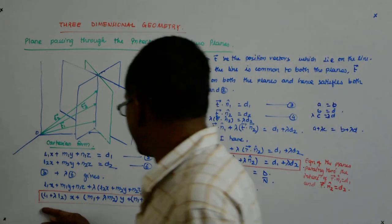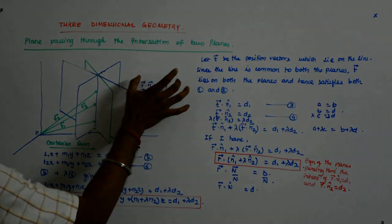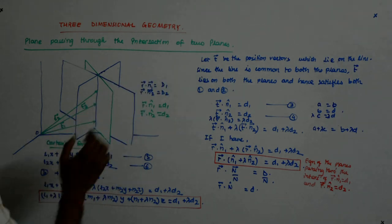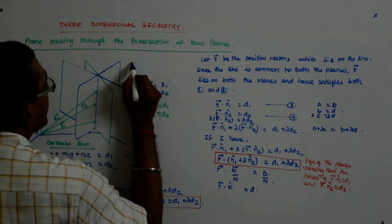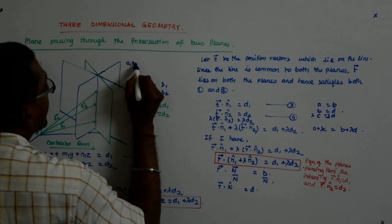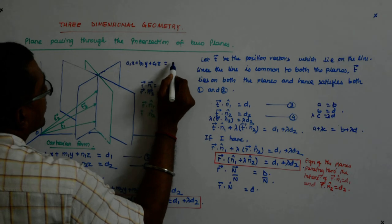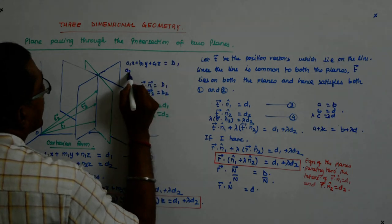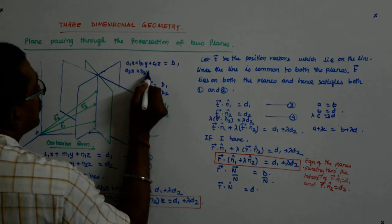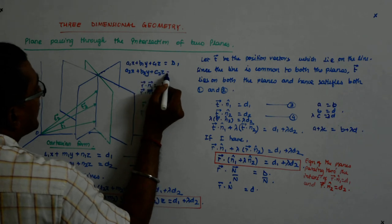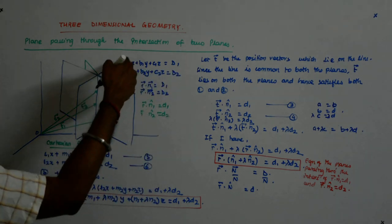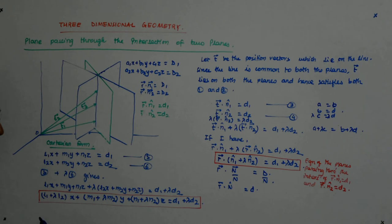So instead of this, if it is given in this form, and this form will correspond to what? It will correspond to maybe A1 x plus B1 y plus C1 z is equal to D1, A2 x plus B2 y plus C2 z is equal to D2. This plus lambda time that will give you what?